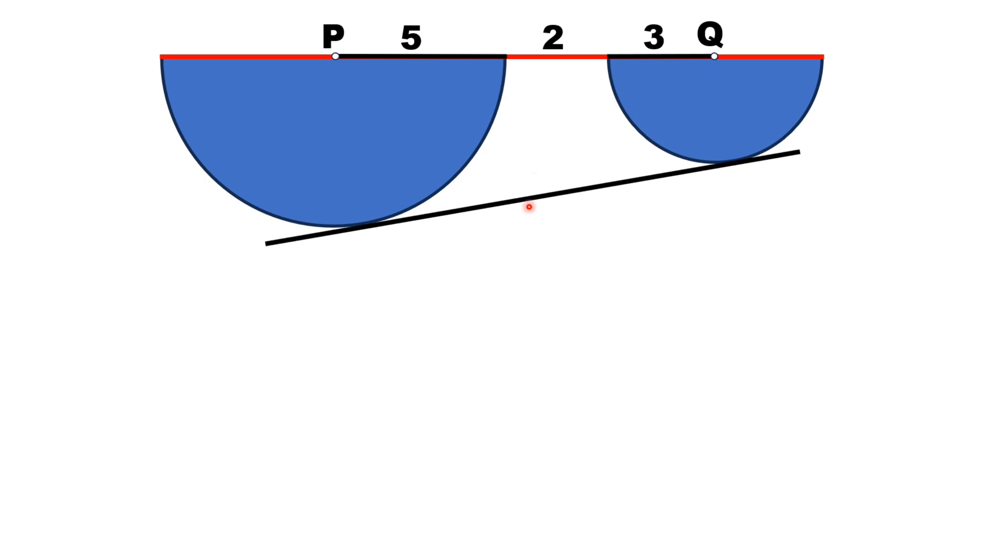A line is drawn which is tangent to both of the semicircles. Let's say the point of tangency of the larger semicircle is point A and the point of tangency of the smaller semicircle is B.